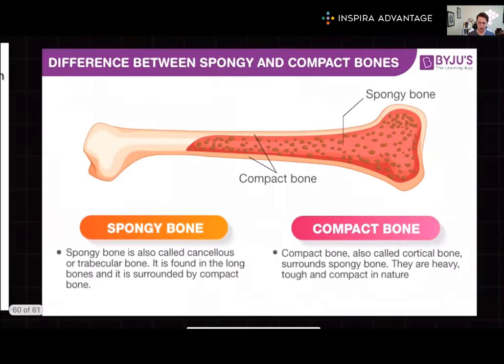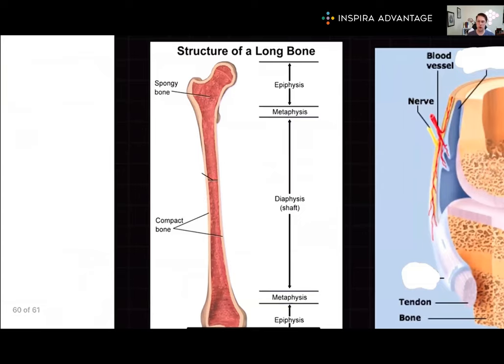Now let's look at the difference between compact and spongy bones. Bones are primarily made up of compact and spongy bone. Compact bone provides strength and density, while spongy bone, also known as cancellous bone, features a lattice-like structure of spicules called trabeculae. The cavities within spongy bone are filled with bone marrow, which comes in two types: red and yellow. Red bone marrow is filled with hematopoietic stem cells, while yellow bone marrow primarily contains fat.